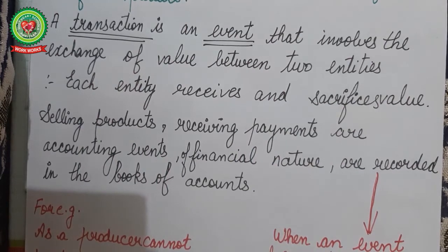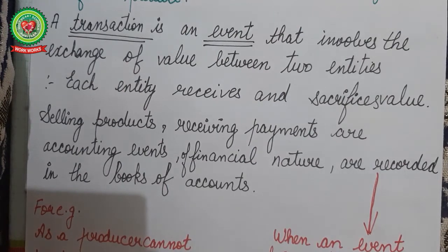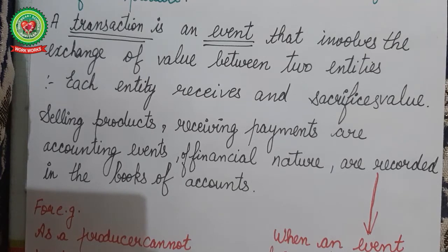Another term related to event is transaction. A transaction is an event itself that involves exchange of value — meaning money — between two parties or entities, where one party receives and the other sacrifices. For example, selling of products and receiving of payments are accounting events of a financial nature. They can be recorded in the books of accounts. When a particular state of business is recorded in the books of accounts in the value of money or money's worth, it is called a transaction.